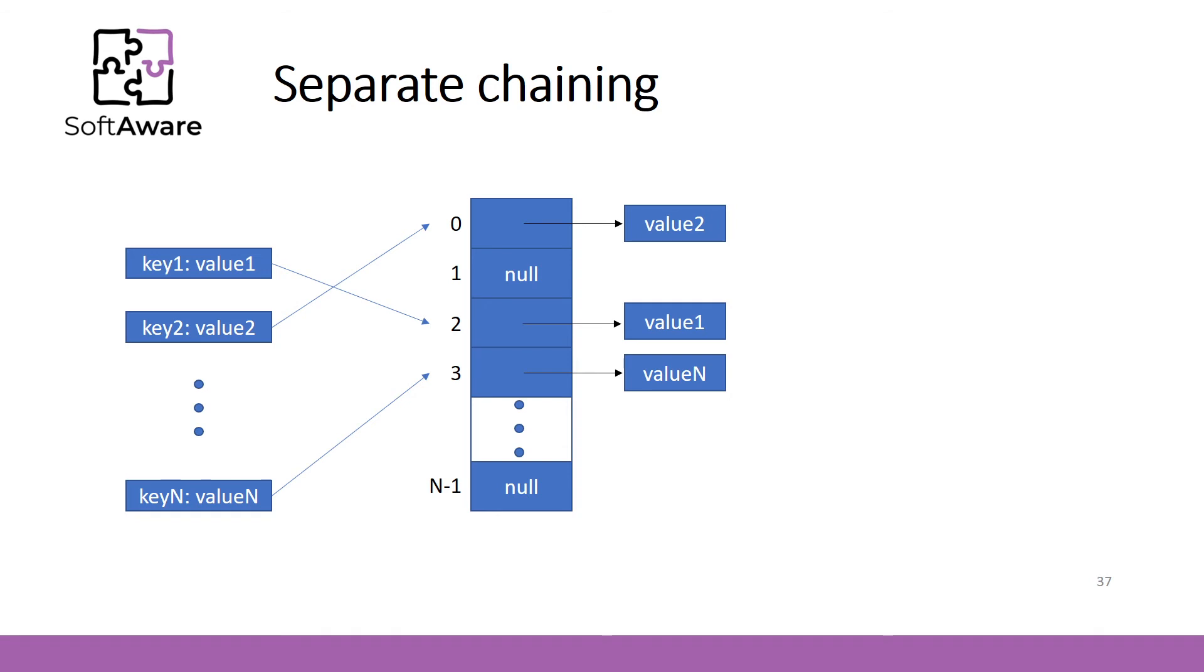The key idea behind separate chaining is that each element of the underlying array stores not exact value but additional data structure instead. Each value associated with the key is stored in the data structure. If collision occurs, we simply add other value to the additional data structure. In order to retrieve the value, we first need to find the index via hash function and then we need to carry out the additional search in the data structure. The most popular data structure for this is a linked list. But other data structures like dynamic arrays, self-balancing binary search trees, even inner hash tables are also applied in some of the implementations.